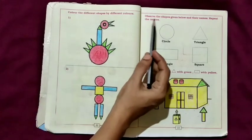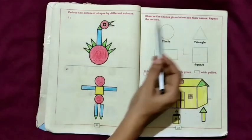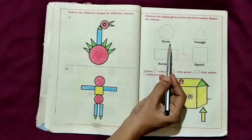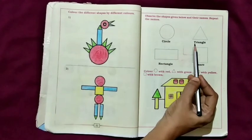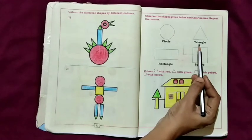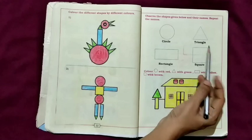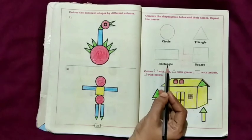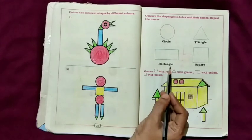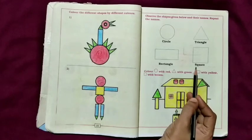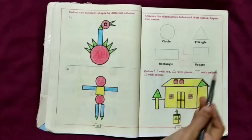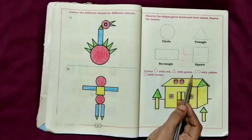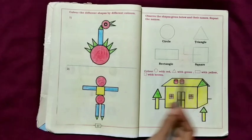Observe the shapes given below and their names. Repeat the name. What is this shape? Circle. C-I-R-C-L-E. What is this shape? Triangle. T-R-I-A-N-G-L-E. What is this shape? Rectangle. R-E-C-T-A-N-G-L-E. What is this shape? Square. S-Q-U-A-R-E. Color circle with red, triangle with green, rectangle with yellow, square with brown.